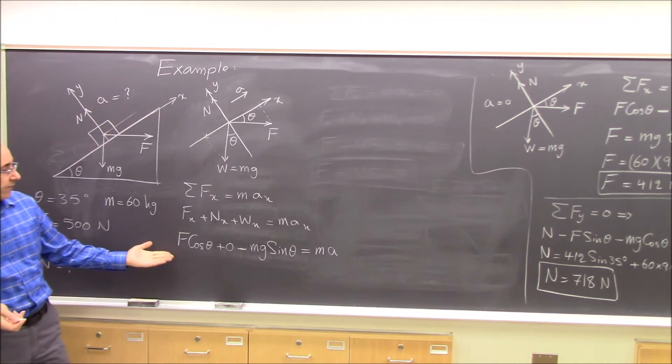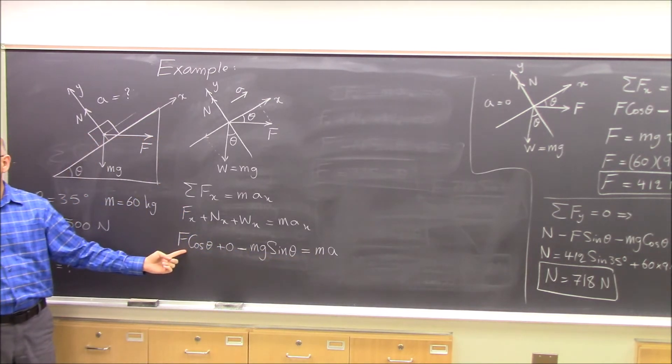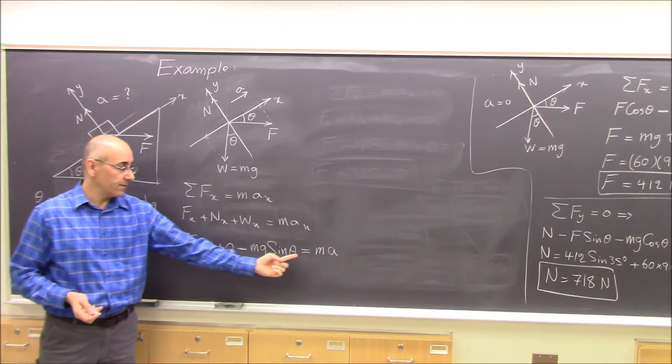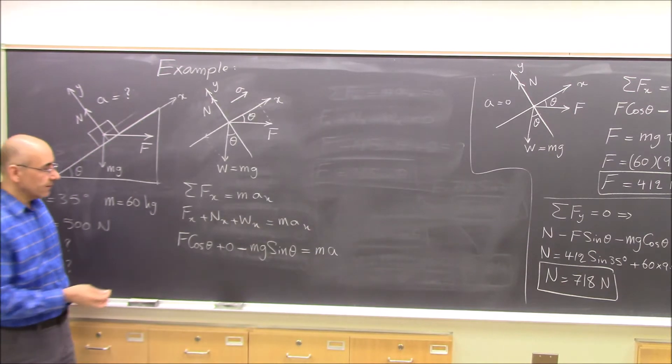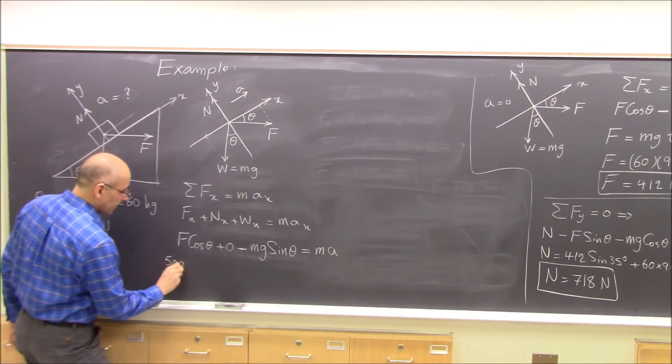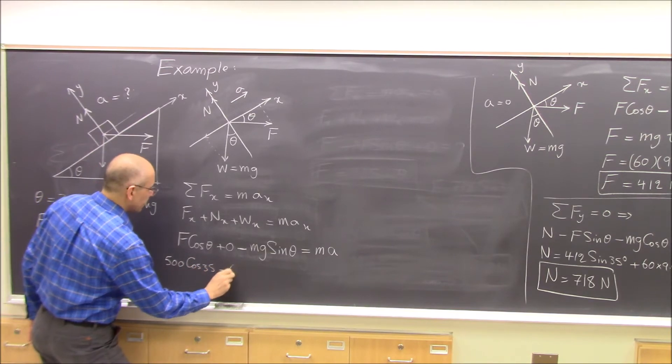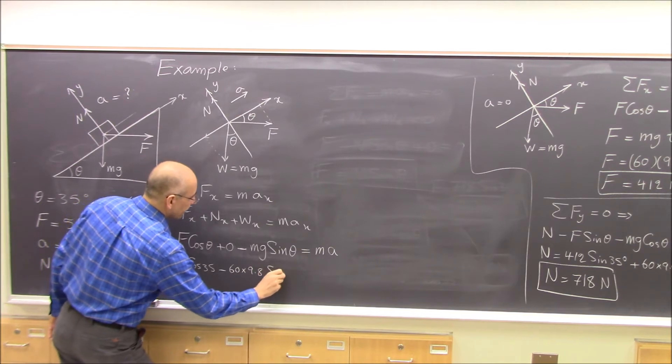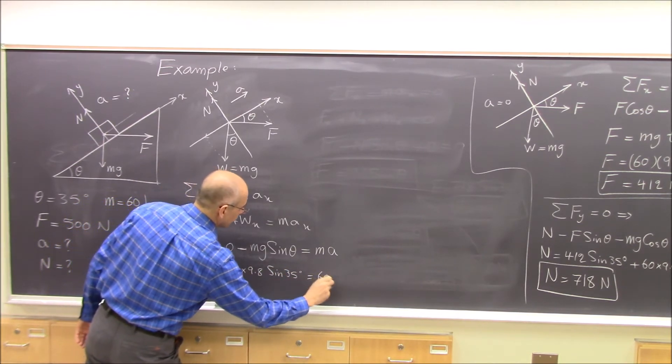And I want to find the acceleration. Do I have everything else? Yeah, I have F, I have theta, I have m. I can solve for acceleration. So I can put everything in: F is 500 cosine 35 minus 60 times 9.8 times sine 35 equals 60 times acceleration.